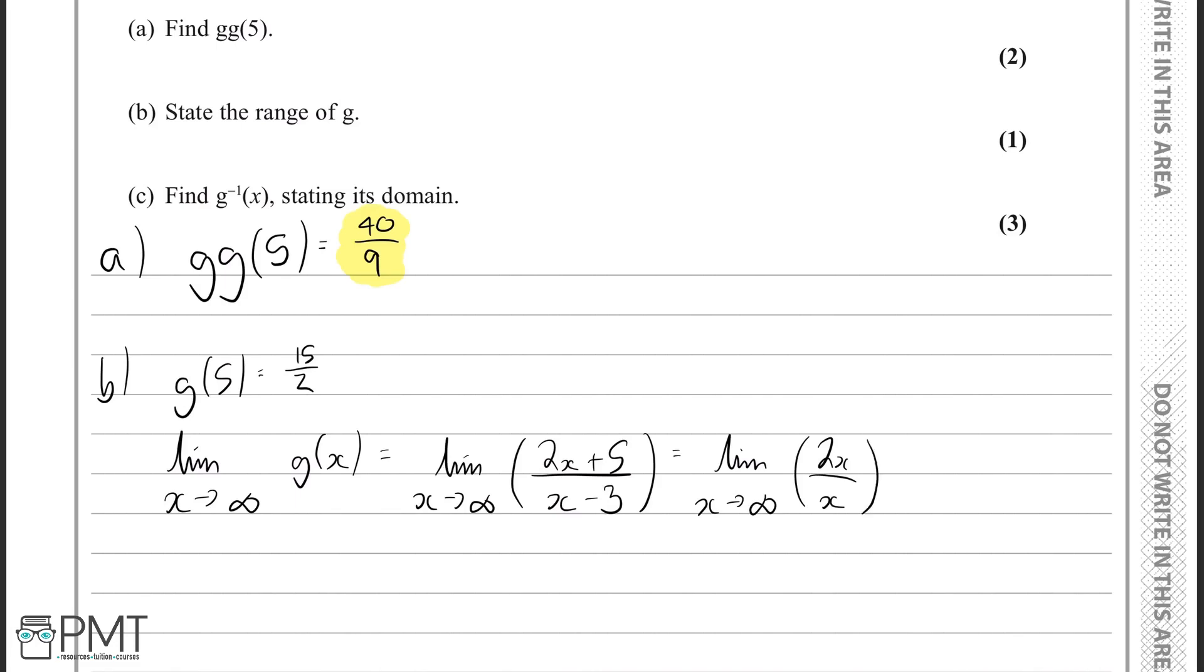And here we can see we can simplify this fraction by crossing out the x's, and we can see that our final limit here is just going to be 2.